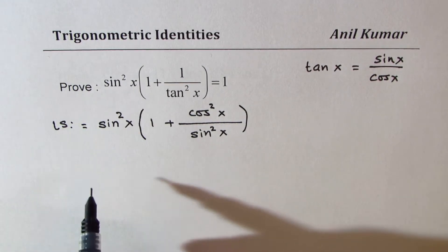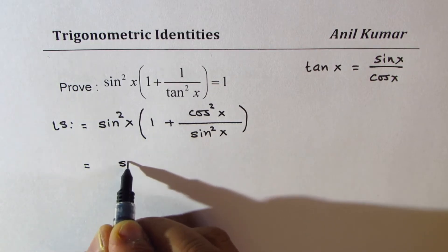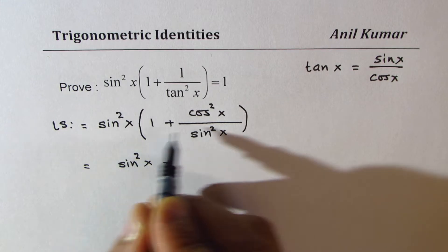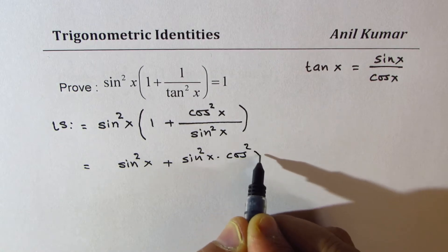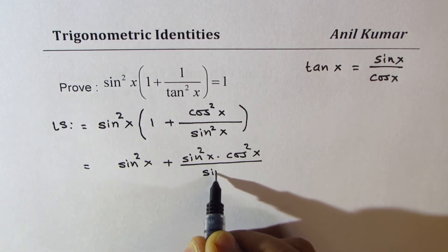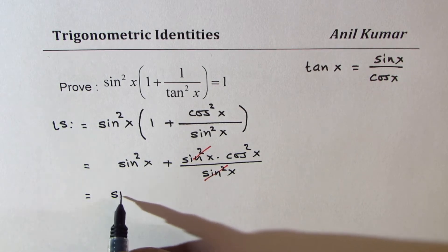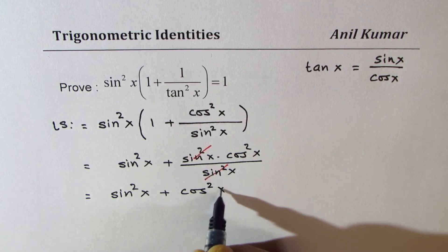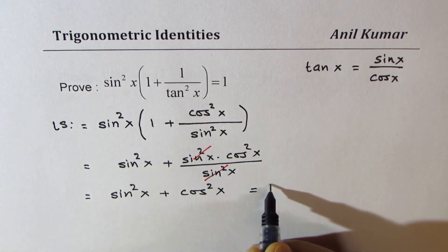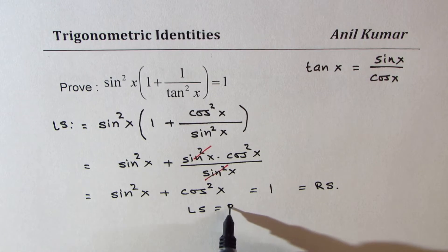Now let's apply the distributive property and open the bracket. Sin square x times 1 is sin square x, and multiplying with the second term we get sin square x times cos square x over sin square x. So sin square x and sin square x cancel. We are left with sin square x plus cos square x, and that is the Pythagorean identity which is equal to 1, which is the same as the right side.